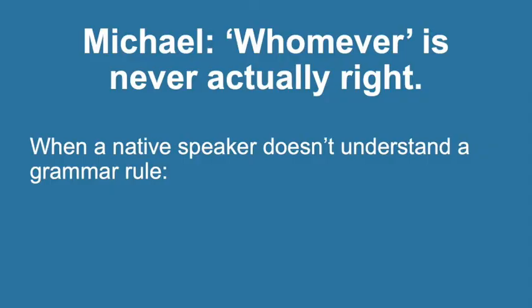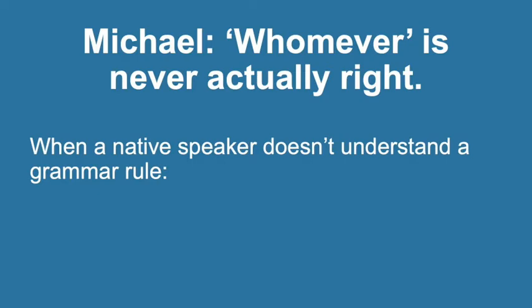I just want to take a minute to pause the clip here and say, why would there be a word in our language that's never actually right? And how is that even a word then? My main takeaway from what he said here is that this is an example of a native speaker who doesn't understand a grammar rule in the language that he speaks fluently. There are two explanations for when this happens. The first is that the rule might be implicitly understood by native speakers, and we follow the rule without knowing it — you were never taught this rule, you just picked it up from your parents subconsciously.